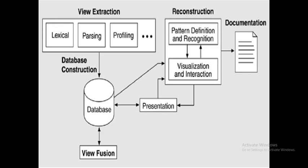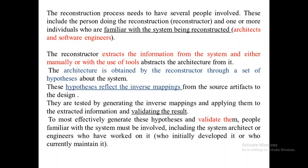The main work of building abstractions and various representations of the data to generate an architecture representation takes place in reconstruction. You can see this diagram: view extraction, lexical analysis, parsing, profiling — various tools and techniques are used to extract information, then construct the database, find views and fusions, then reconstruct the architecture through pattern definition, recognition and visualizing. It is an interactive and iterative process — we cannot reconstruct the software in one attempt or one day. It is a continuous process that must be repeated until the end user is satisfied.